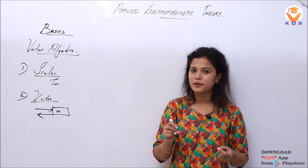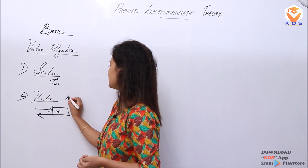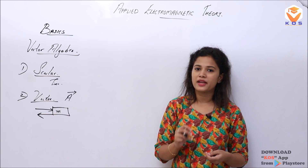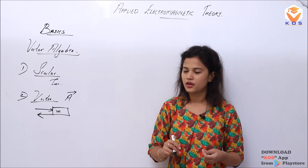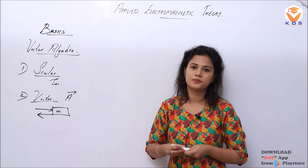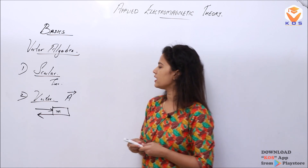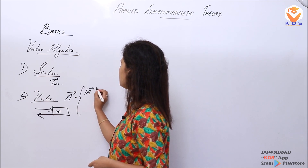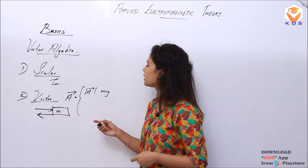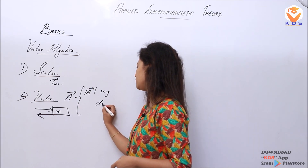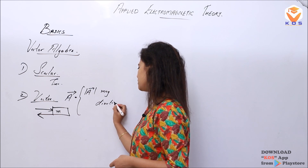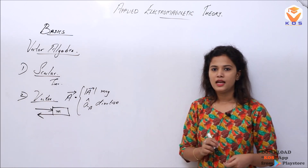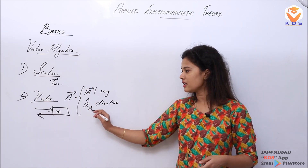When we represent a vector quantity A, this is a vector quantity defined by magnitude as well as direction. This is the unit vector — a cap. A vector quantity is defined by two quantities: the magnitude part and the corresponding direction, which is defined by the unit vector a cap.